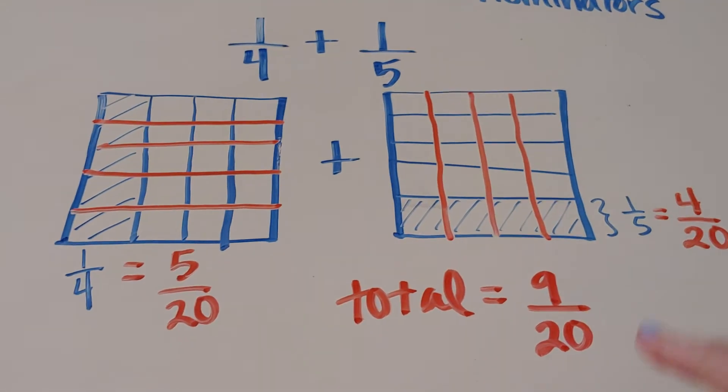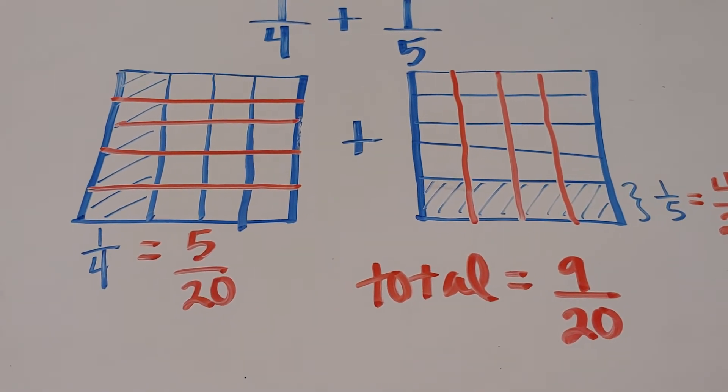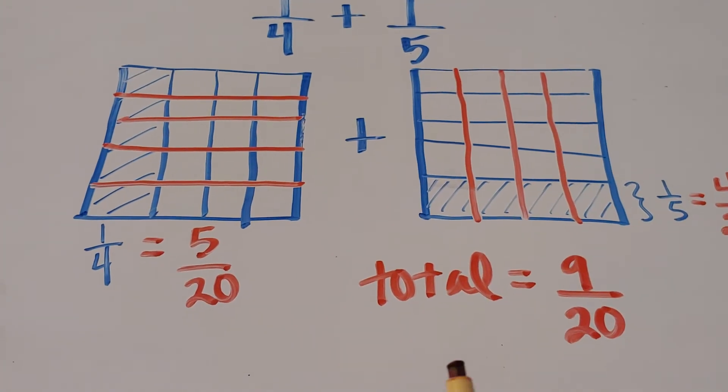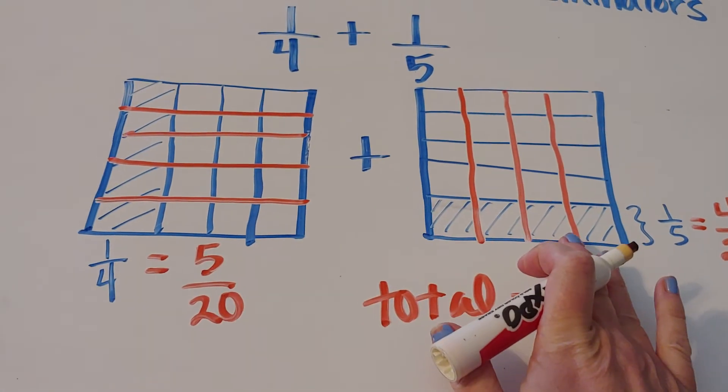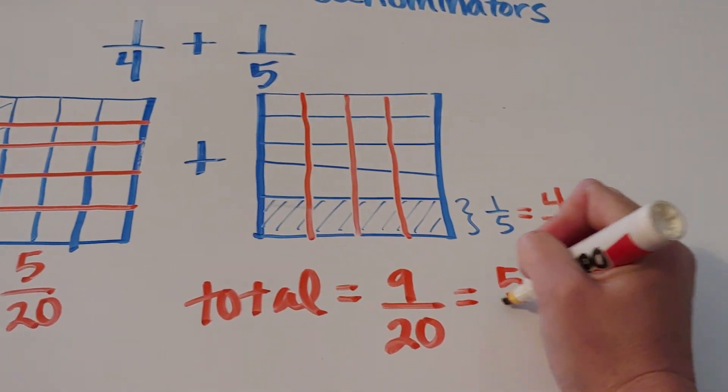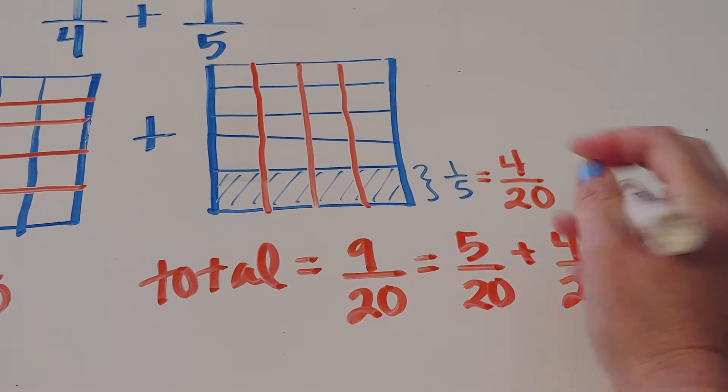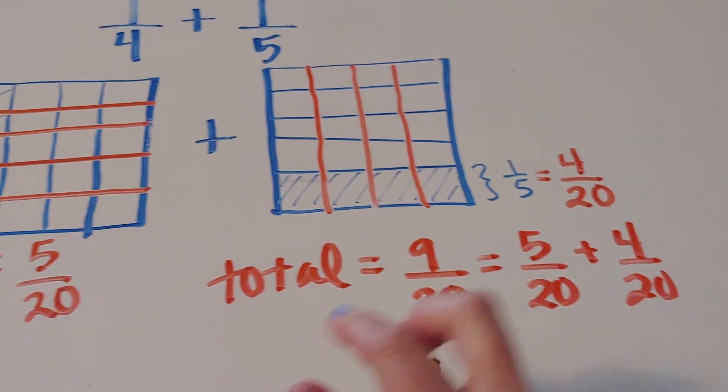Now that could be a little bit confusing because people say, 'Well, isn't it nine out of forty?' But what I'm saying is that we can now compare apples to apples. So I have five-twentieths plus four-twentieths, and that's going to be nine-twentieths.